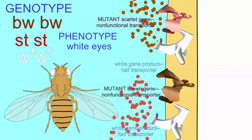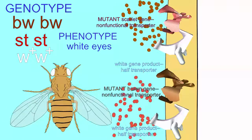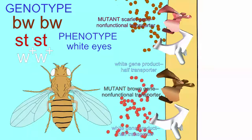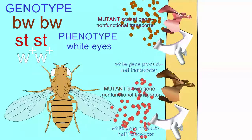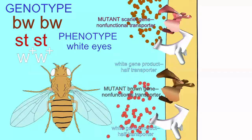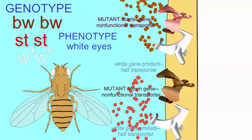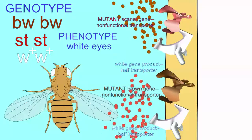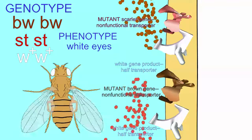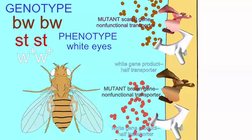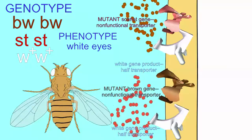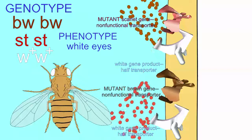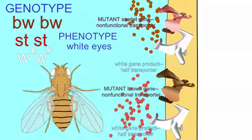So not only can mutations in the white gene cause white eyes, but mutations simultaneously in the brown and scarlet genes can cause white eyes, even if the white gene is functional.